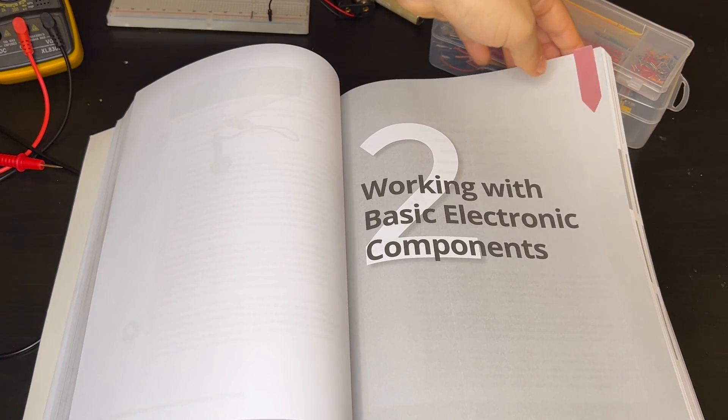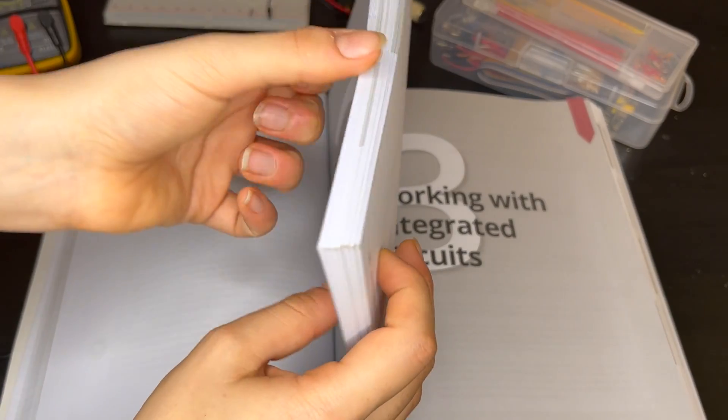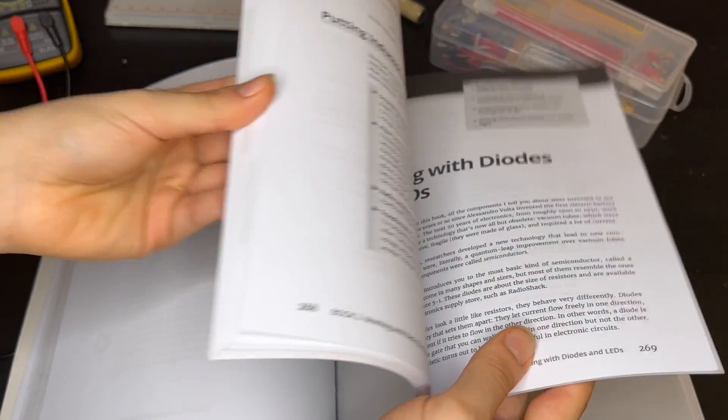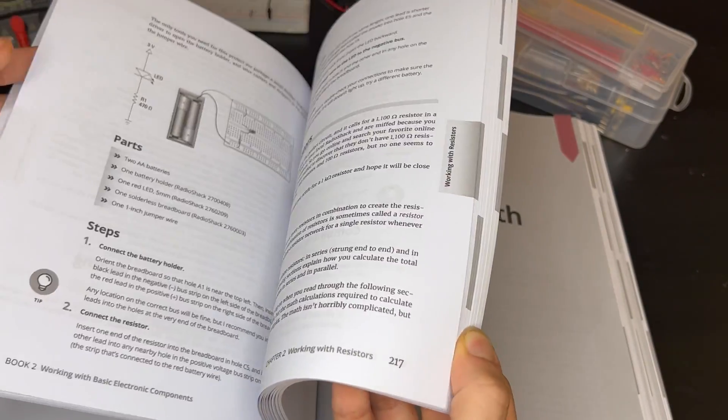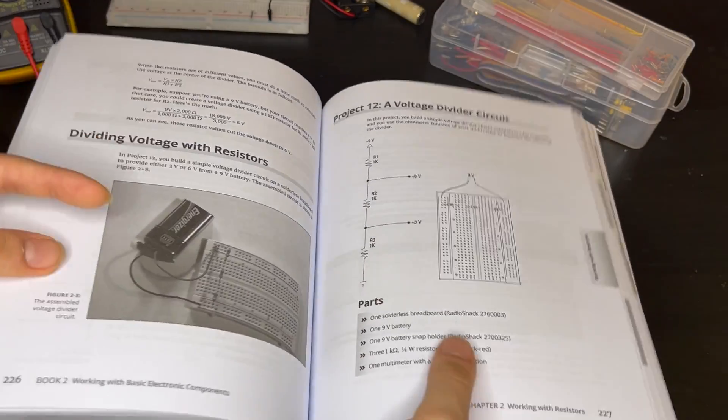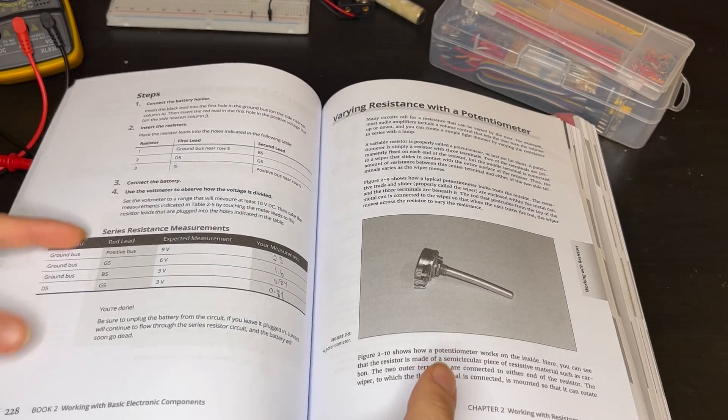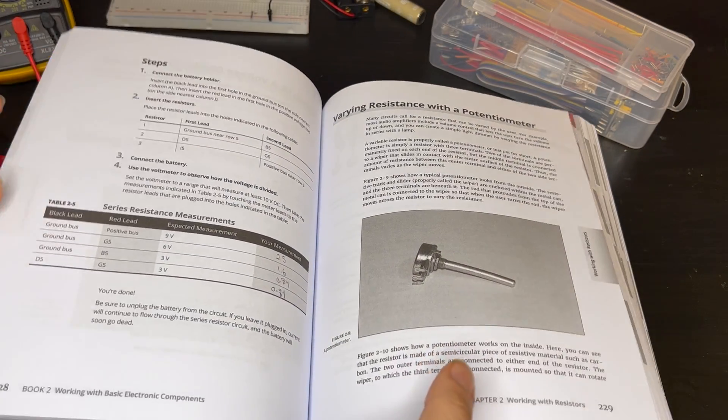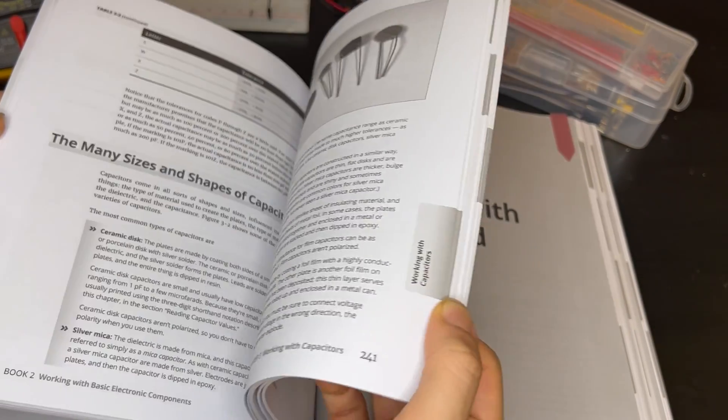In Book Number Two, you start working with basic electronic components. This book is relatively large. You start building circuits with resistors and capacitors. There are many projects with pictures showing how they look and detailed steps about where to plug things.